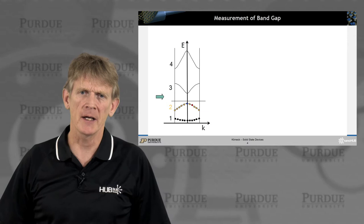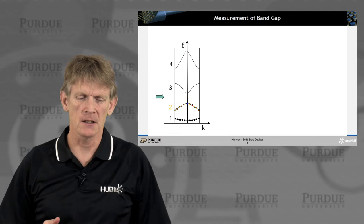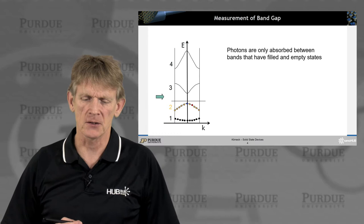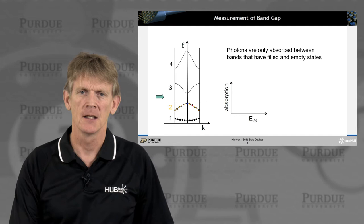So, how do we measure band gaps? That's still a relatively easy experiment to make, so consider a band structure like this, where the valence bands are full, the conduction bands are empty, and photons can be absorbed in such a structure between bands that are filled and empty states.